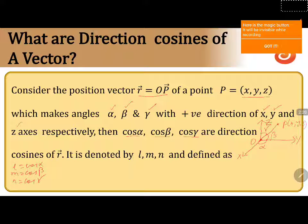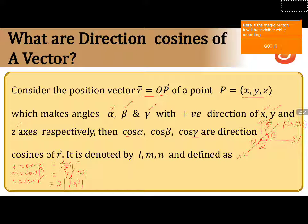Now we write L equals cos alpha equals x divided by the magnitude of r. Similarly, M equals cos beta equals y divided by the magnitude of r, and cos gamma equals z divided by the magnitude of r. The denominator in each direction cosine L, M, N is the magnitude of r, which is calculated as the square root of x squared plus y squared plus z squared.